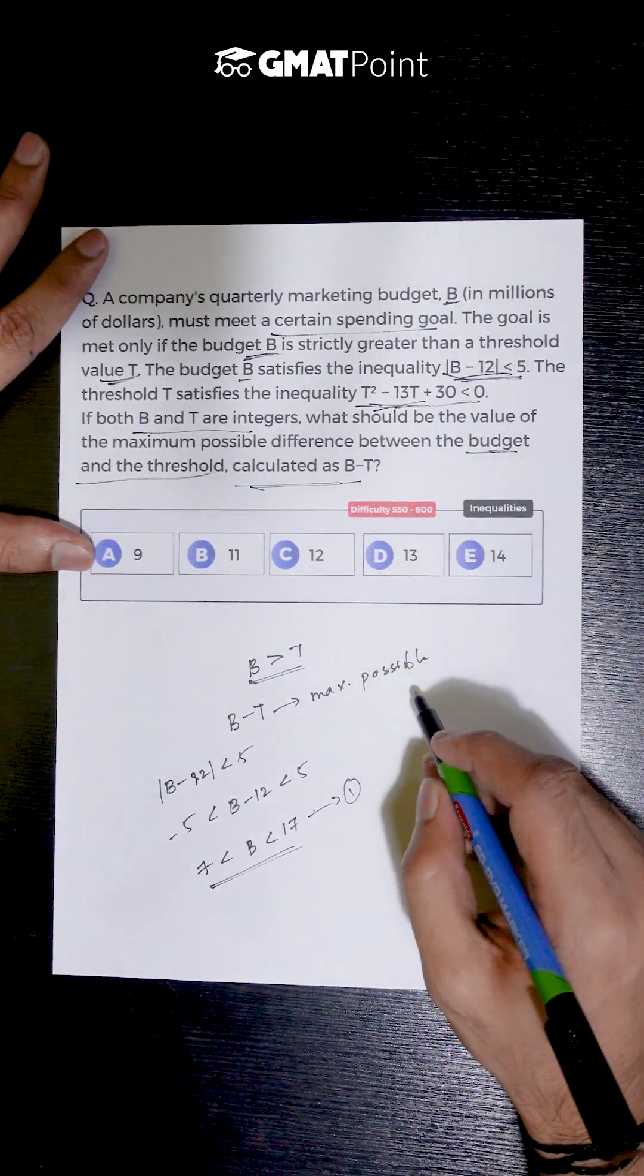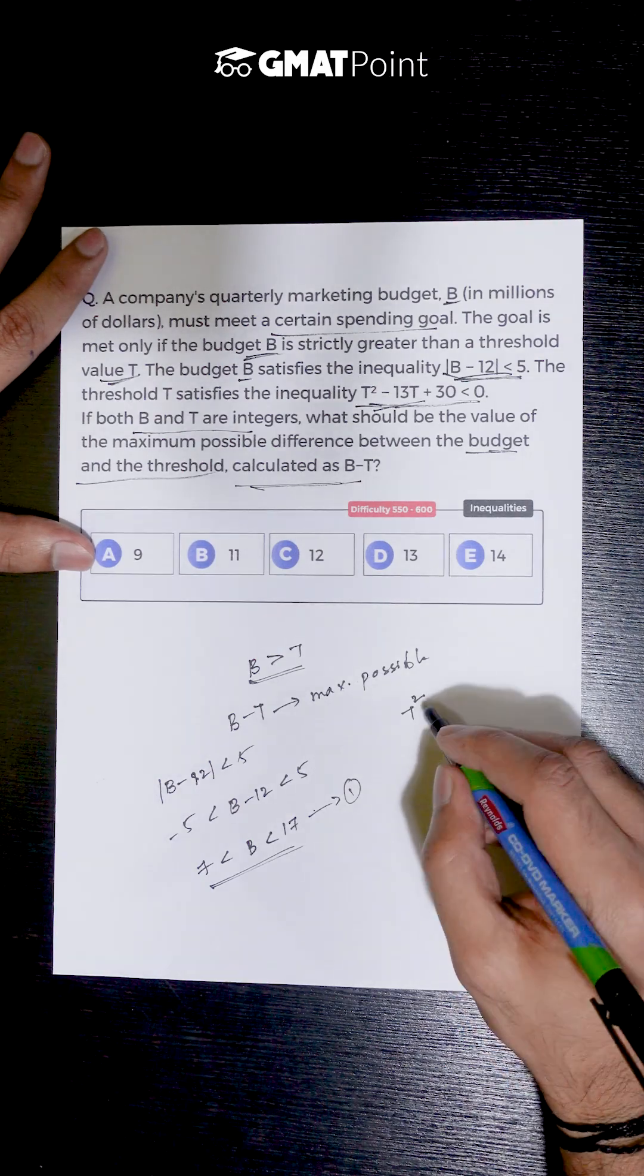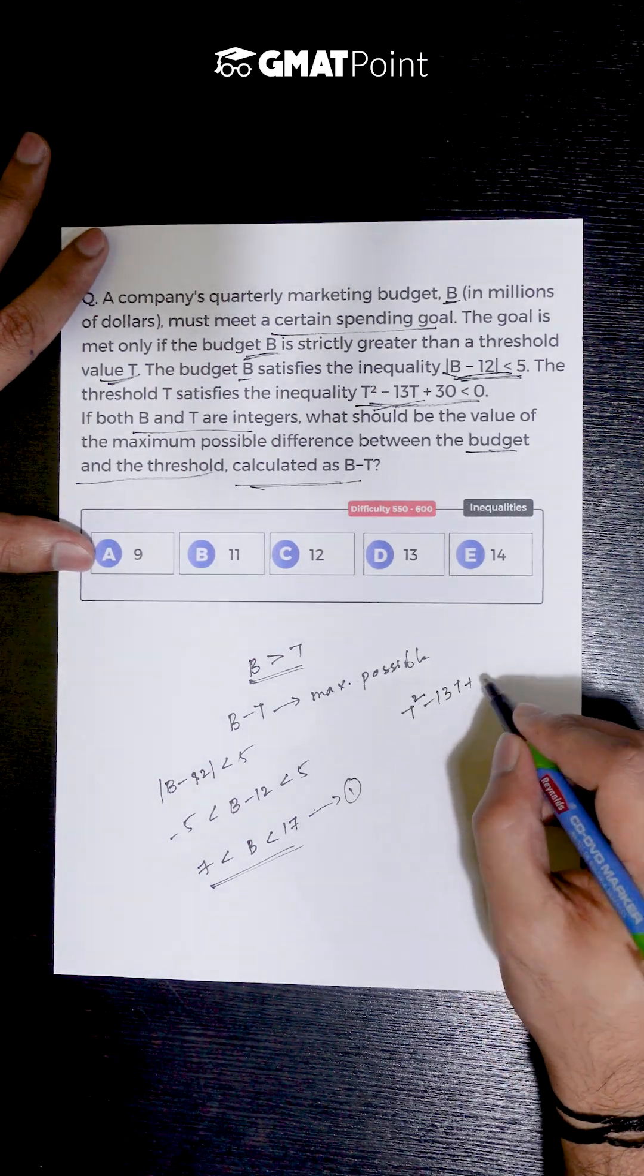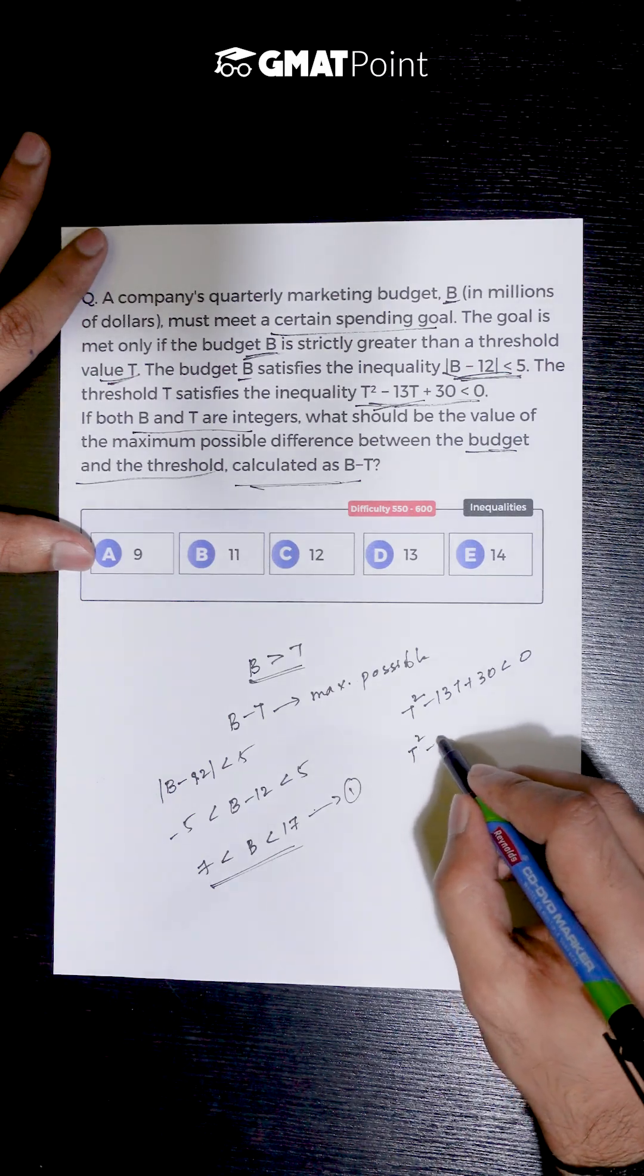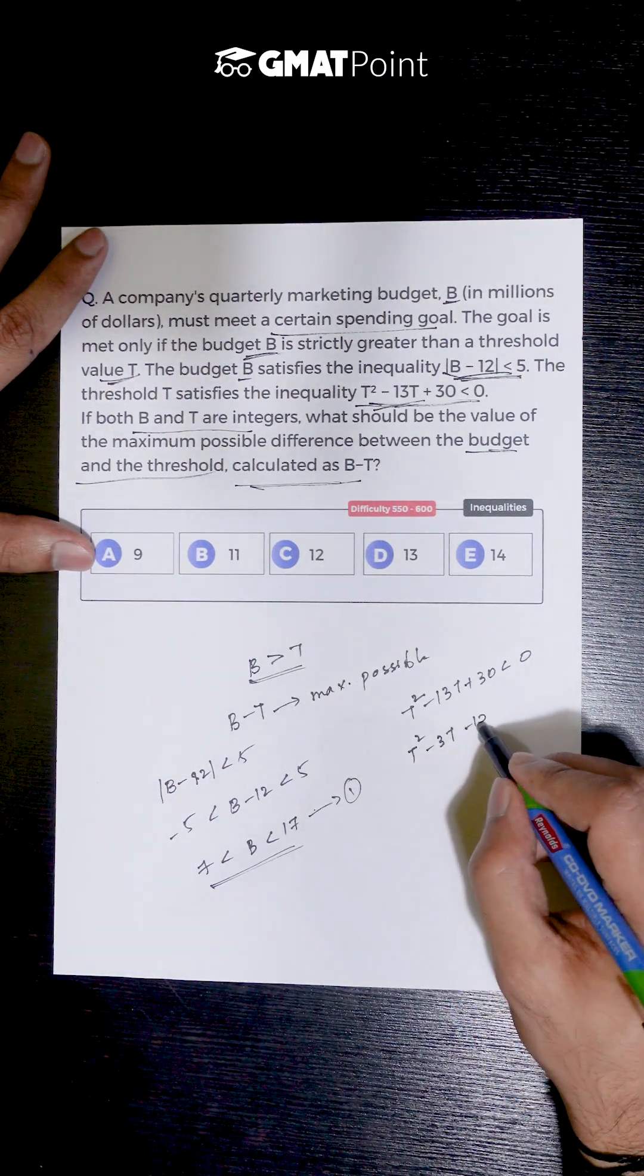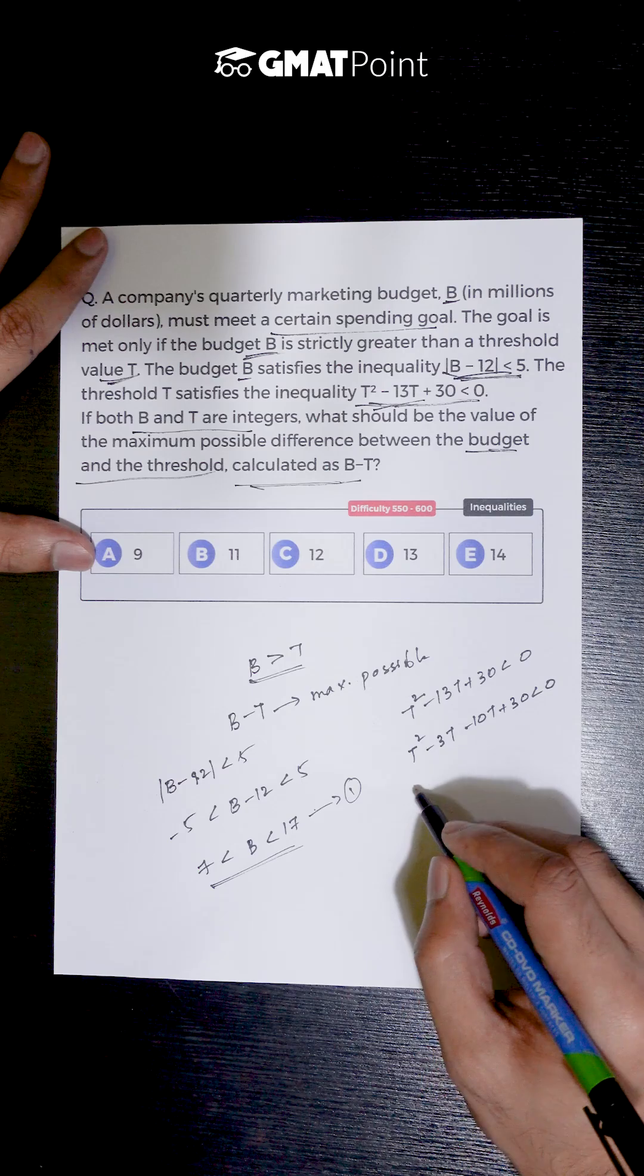We are also given an inequality for T, which is T² - 13T + 30 < 0. This can also be written as T² - 3T - 10T + 30 < 0.